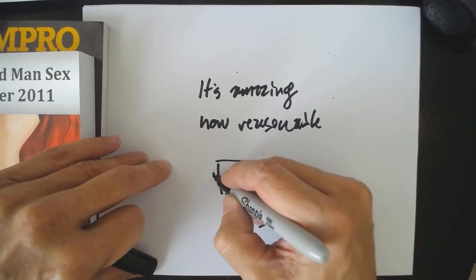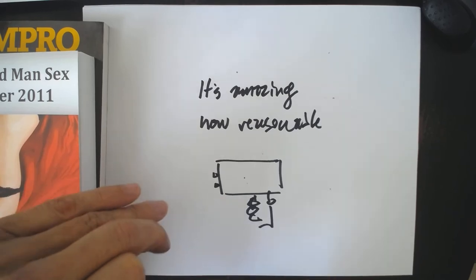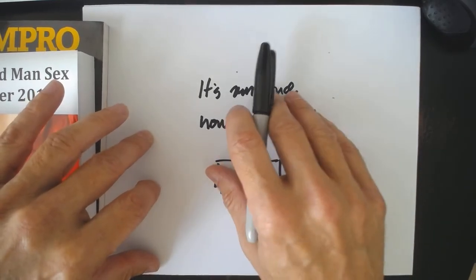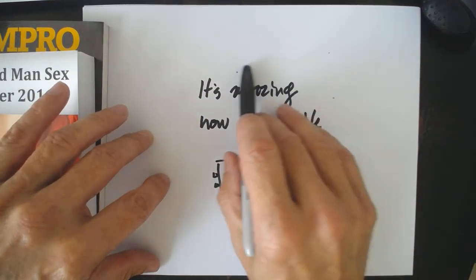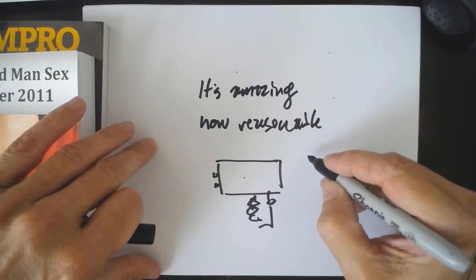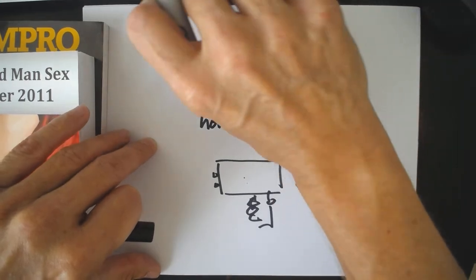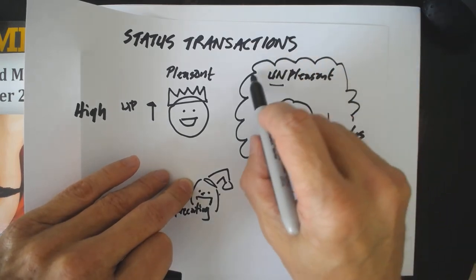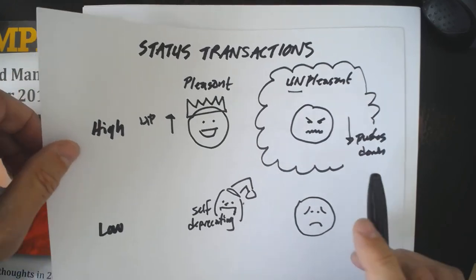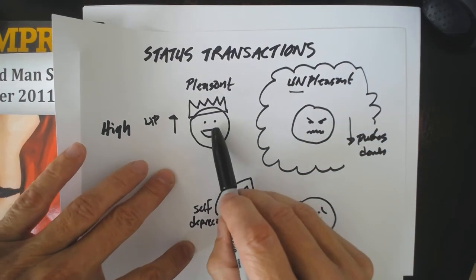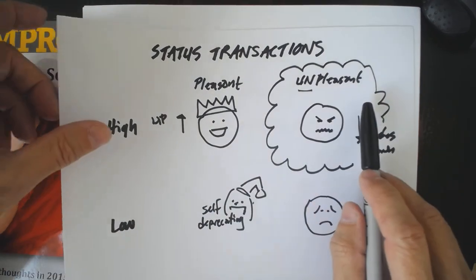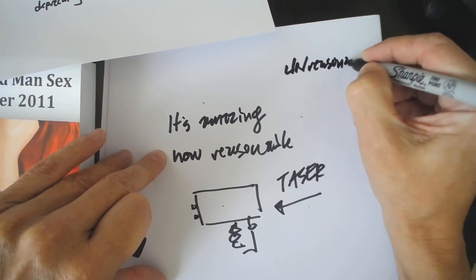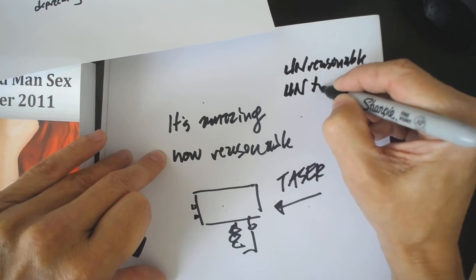In his mental health ward, the nurses were sometimes required to immobilize a patient who had become violent or dangerous. And Athol said it was amazing how reasonable their behavior became when you showed them the taser. This is an approach useful when people are coming at you from an unpleasant high position — sometimes you can't afford to be pleasant, because they're going to continue to come at you with an unreasonable request in an unreasonable tone.